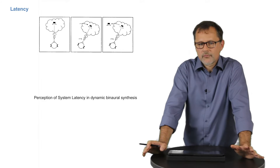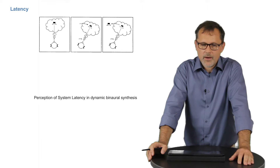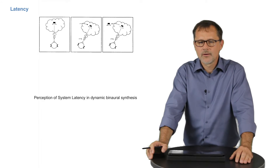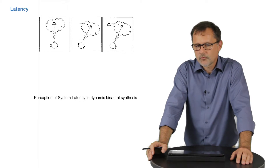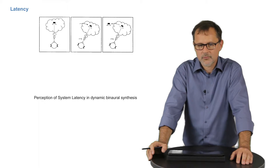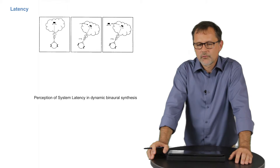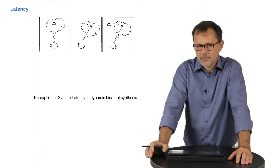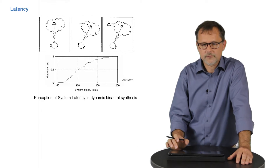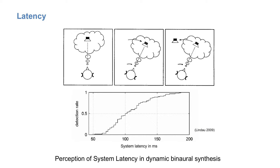The latency of binaural systems can have several technical sources, from the head-tracking system itself with its latency and update rate, to the processing latency of the fast convolution algorithm, to the reproduction latency of the audio playback and the sound card. If you summarize all these contributions as system latency and measure in a listening test at what point listeners start to notice this in a dynamic binaural simulation, you get the following curve. It shows the detection rate measured in a three-alternative force choice experiment, and you can see that at a latency of 50 milliseconds, the subjects start to notice artifacts due to latency, and that at 200 milliseconds, the latency can always be easily identified.